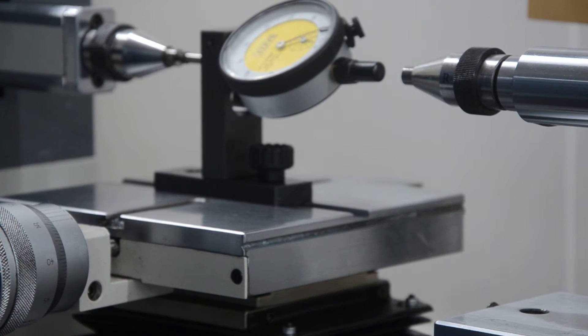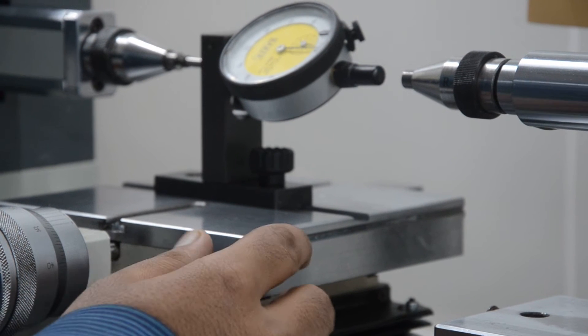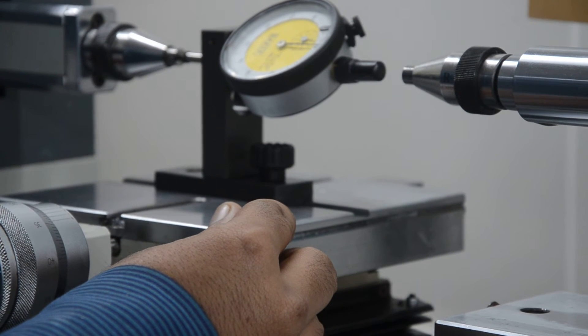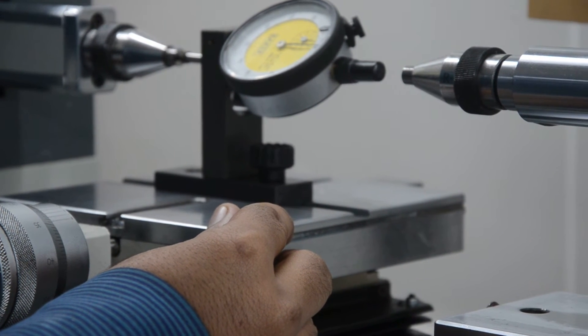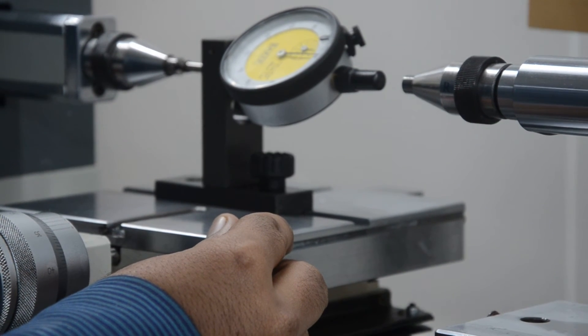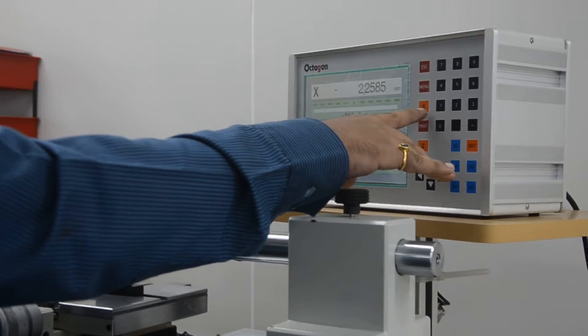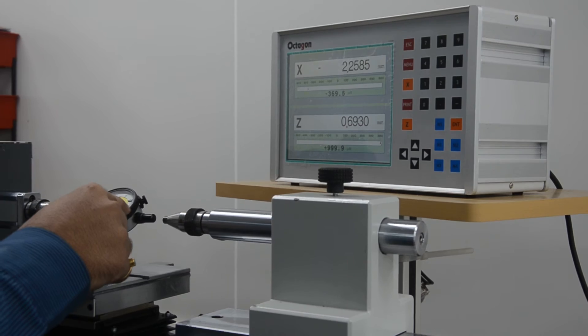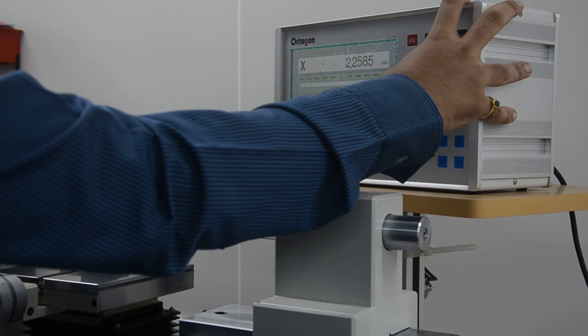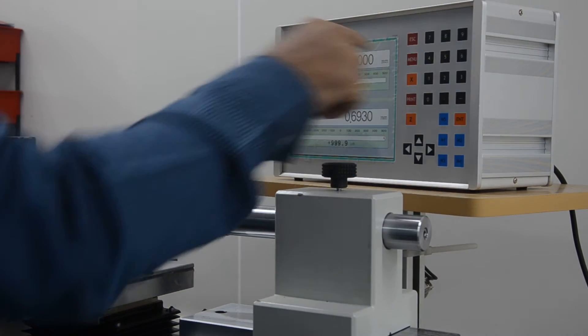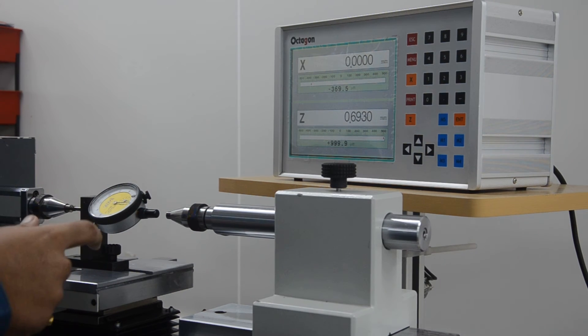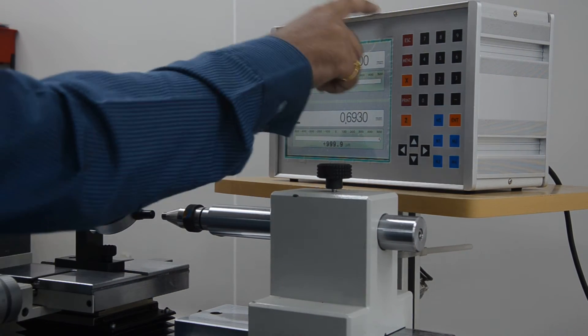So let's get started with the actual procedure. First of all, set the pointer on 0 and here this is the display on which there is one button, X button. So once this pointer is set on 0, just press the X button so that this will be the reference or the 0 reading from the display.